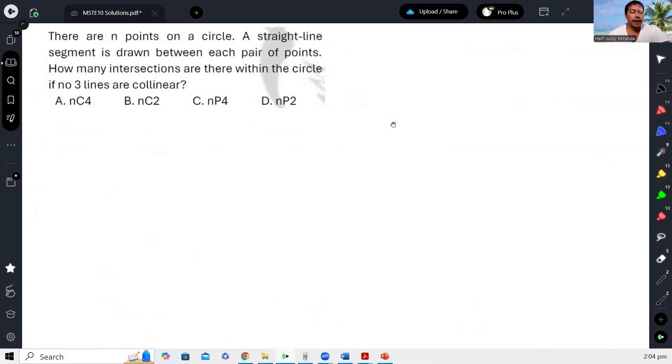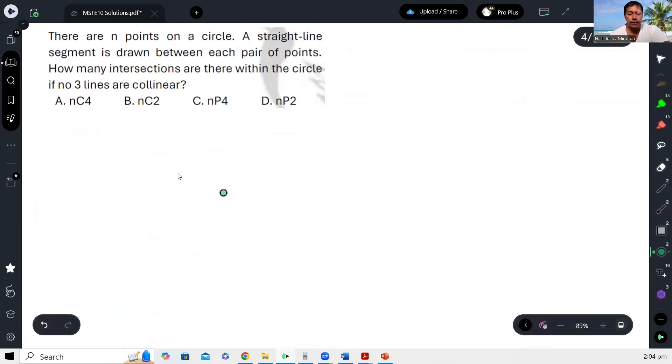Okay, next: there are n points on a circle. A straight-line segment is drawn between each pair of points. How many intersections are there within the circle if no three lines are collinear? So to figure this out, let's try to have a circle.